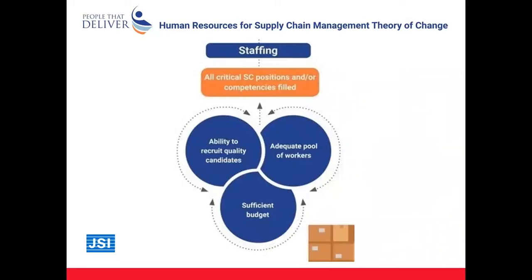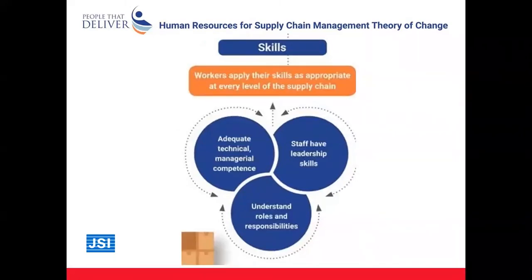The first prerequisite is staffing. To ensure optimal work performance, all critical supply chain positions and competencies need to be filled. This means the supply chain organization must have sufficient budget for staff, the ability to recruit quality candidates, and an adequate pool of workers. The second prerequisite is skills. Workers need to be able to apply their skills at every level of the supply chain, fully understanding their roles and responsibilities, with adequate technical and managerial competence and leadership skills.